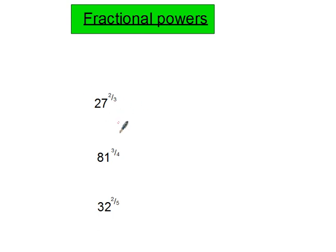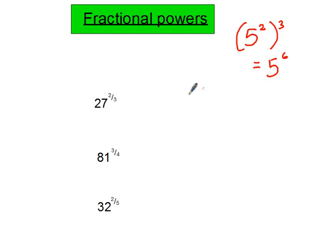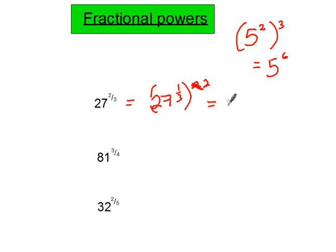Here we have fractional powers where the numerator isn't 1 — these aren't unit fractions. First, a reminder of an index rule: if you have something like 5 to the power of 2 raised to the power of 3, you can write it as one power by multiplying them together. Using that idea, I'll write 27 to the power of two thirds as 27 to the power of one third, all raised to the power of 2. The cube root of 27 is 3, and squaring that gives 9.